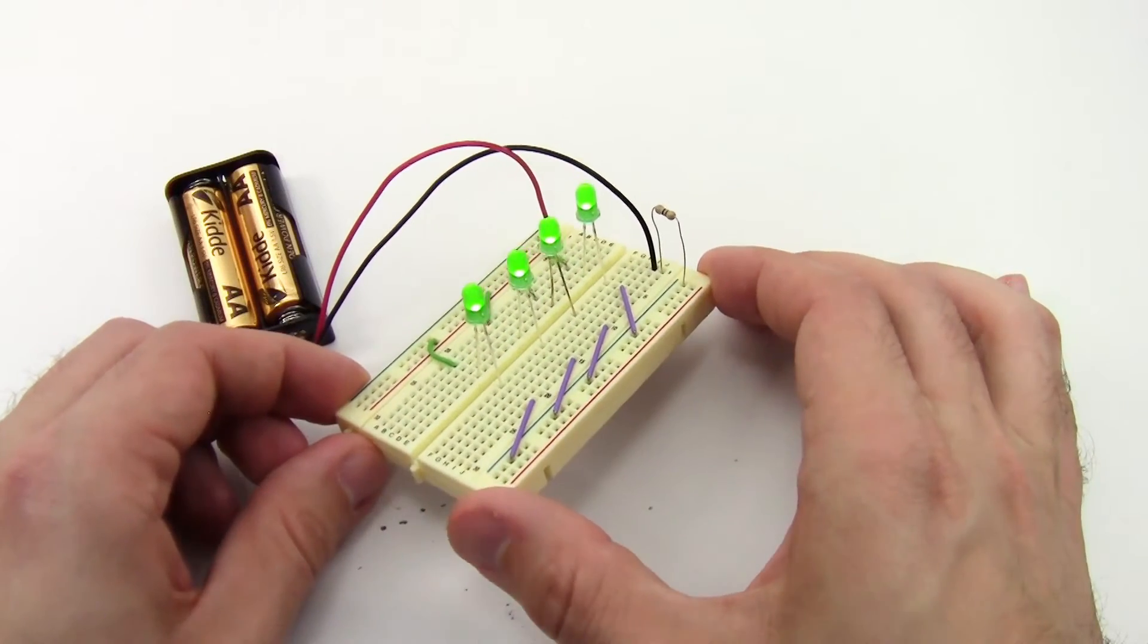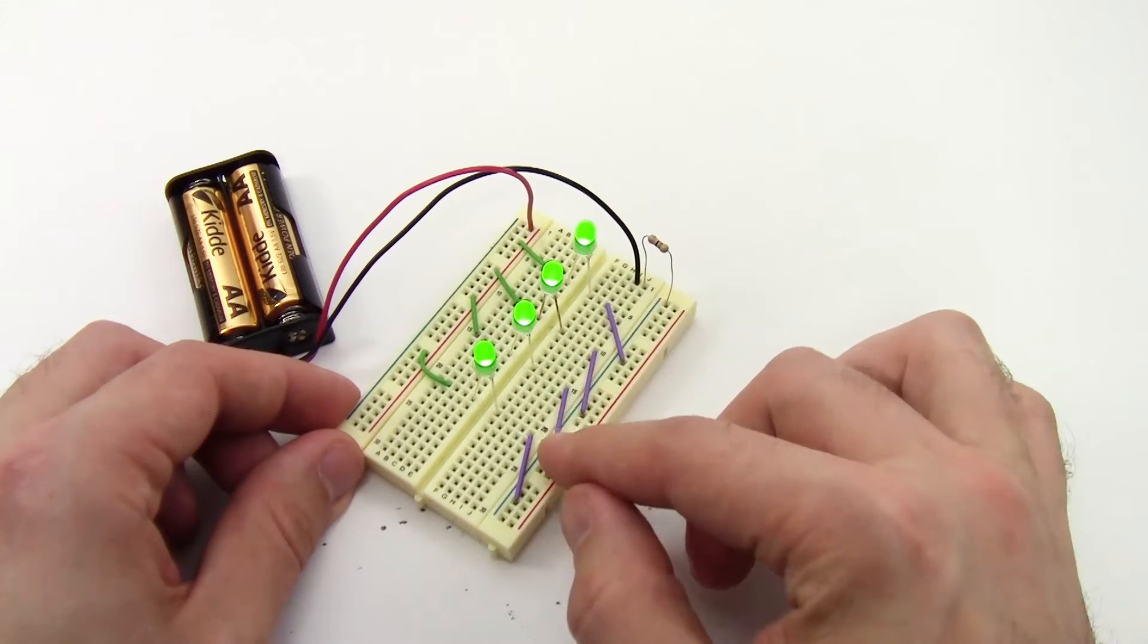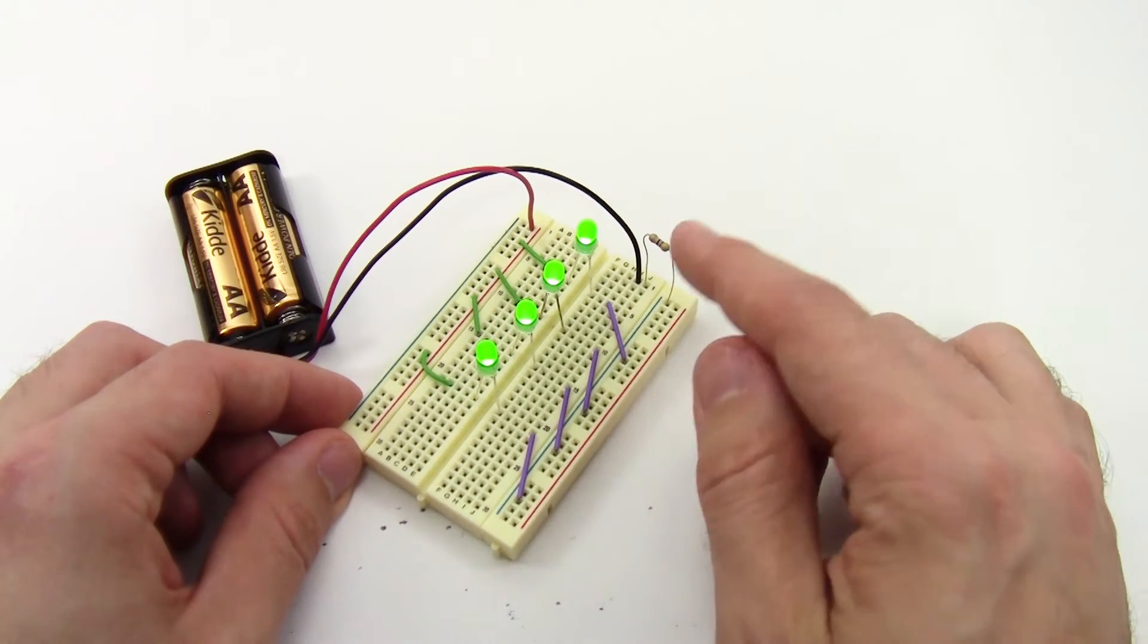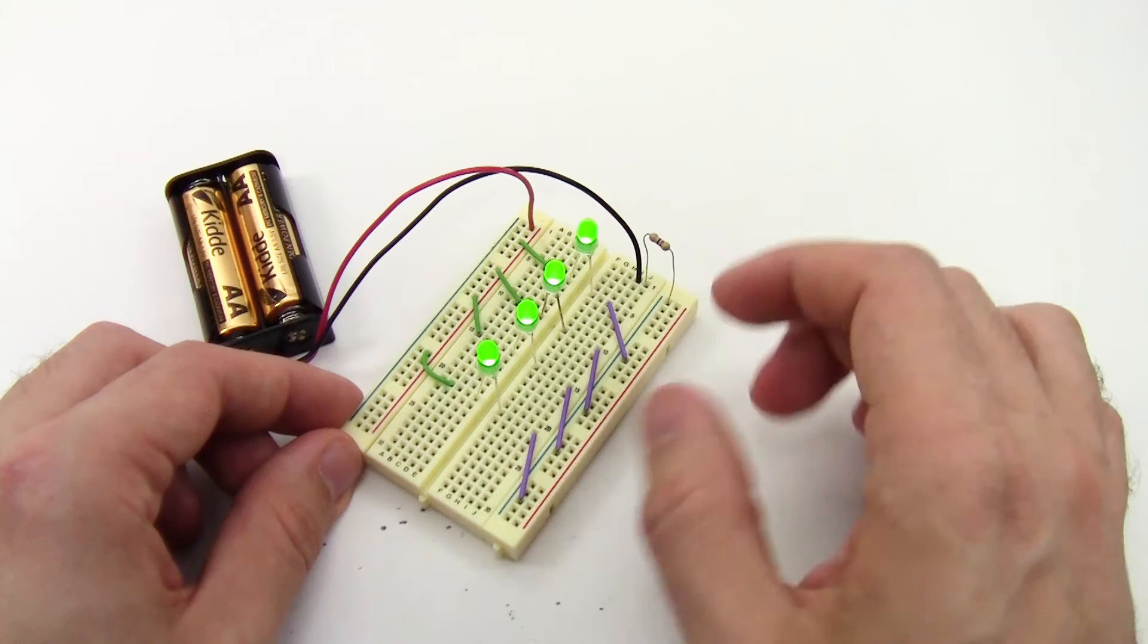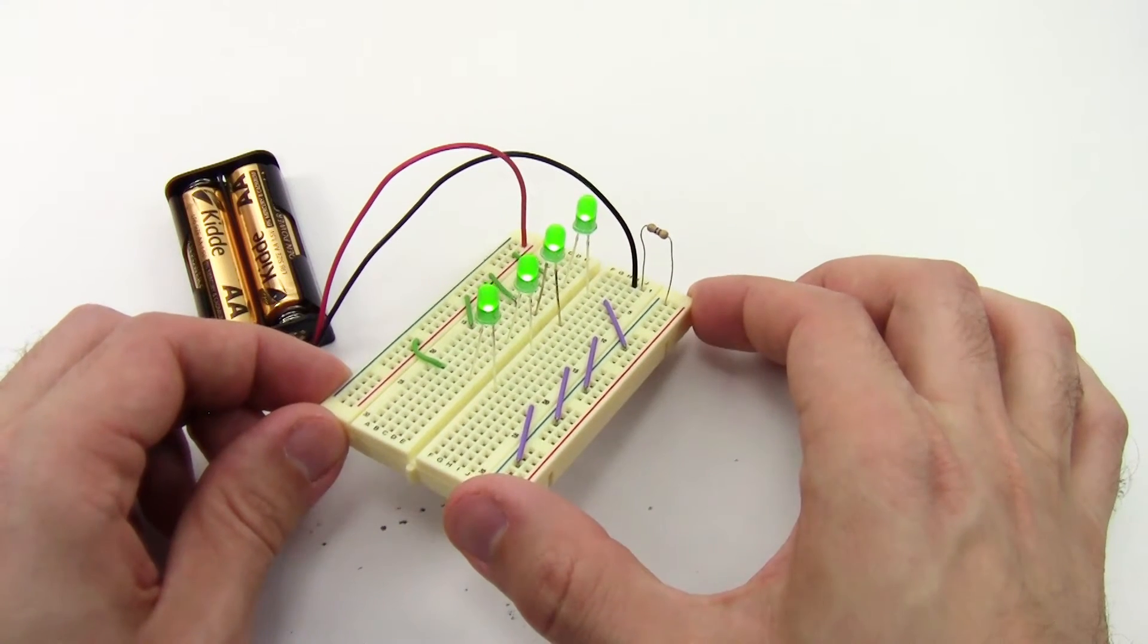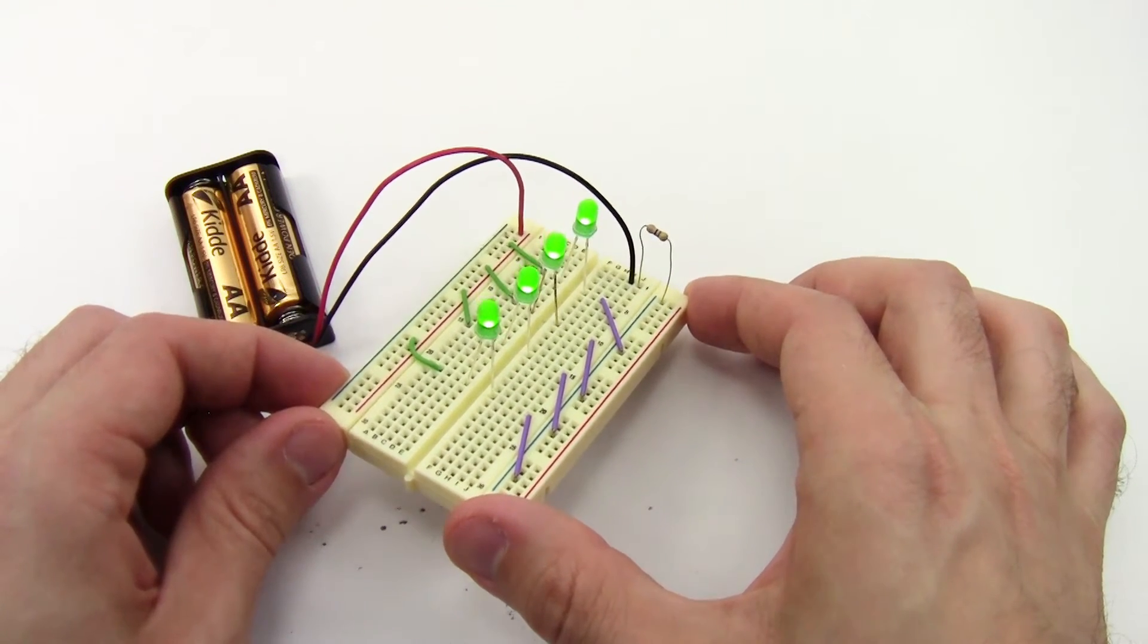Okay, so you might be wondering, if I want to put a bunch of LEDs in parallel, do they each actually need their own individual resistor, or can I get away with using just one resistor? And the answer is yes, up to a certain extent. And to explain that, we need to do a little more math.